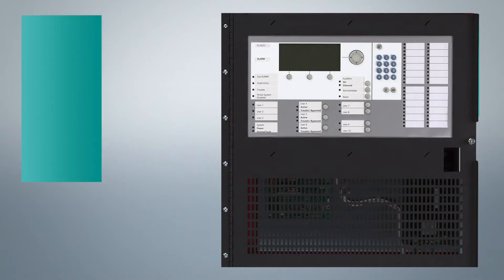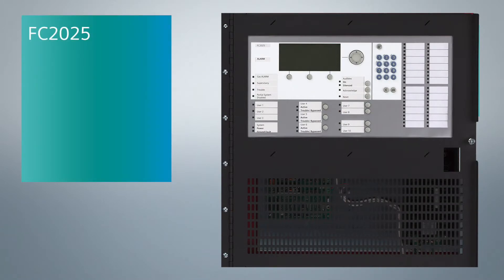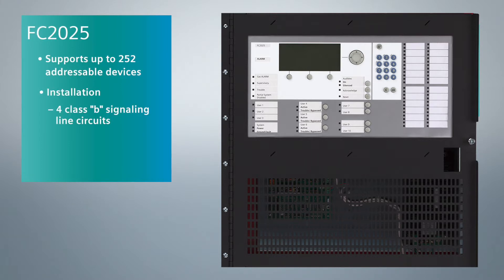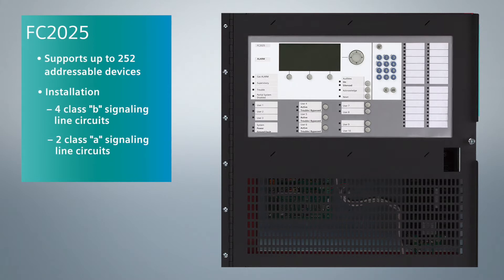There are two versions available. The first, model FC 2025, will support up to 252 addressable devices, which can be installed on four Class B signaling line circuits or two Class A signaling line circuits.